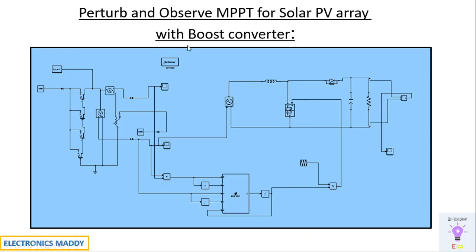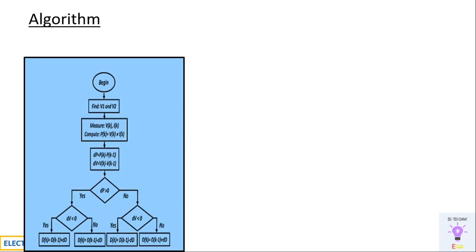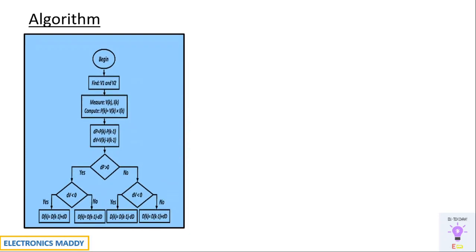The duty ratio is controlled by the Perturb and Observe algorithm using MPPT technique. We'll be writing the code using a MATLAB function block. The algorithm measures V and I, then computes power as the product of voltage and current.